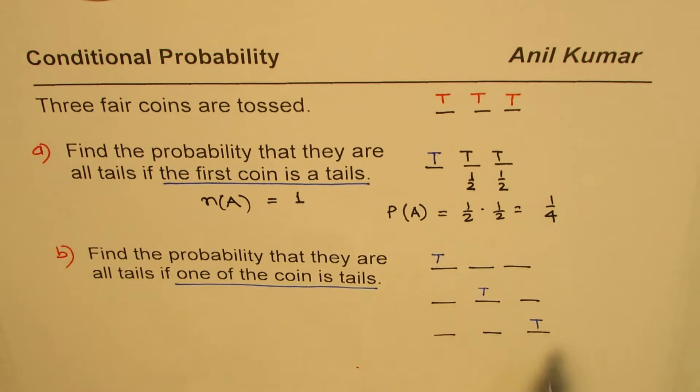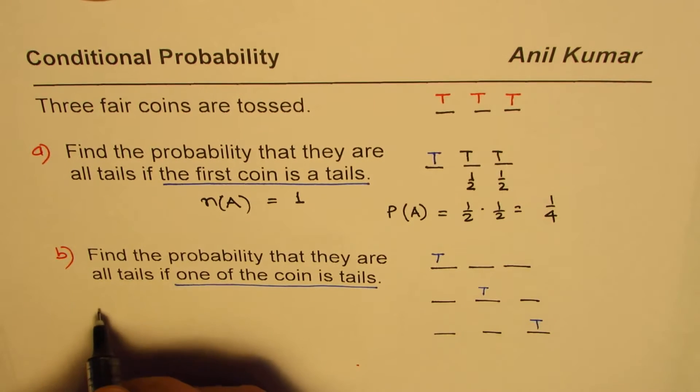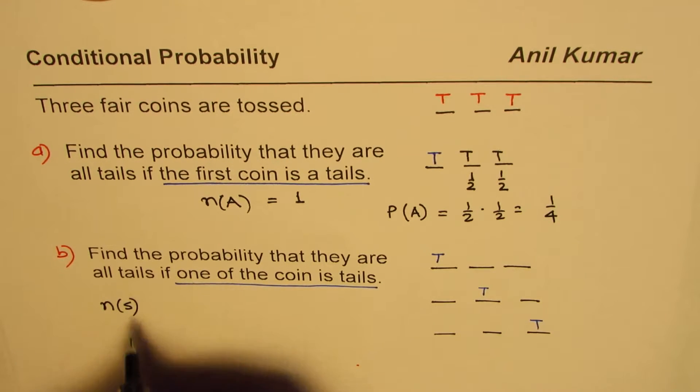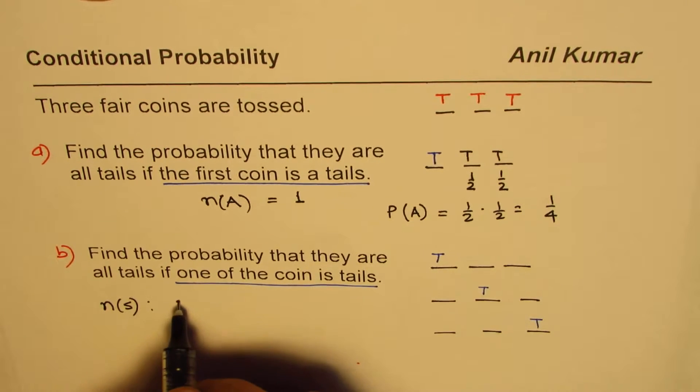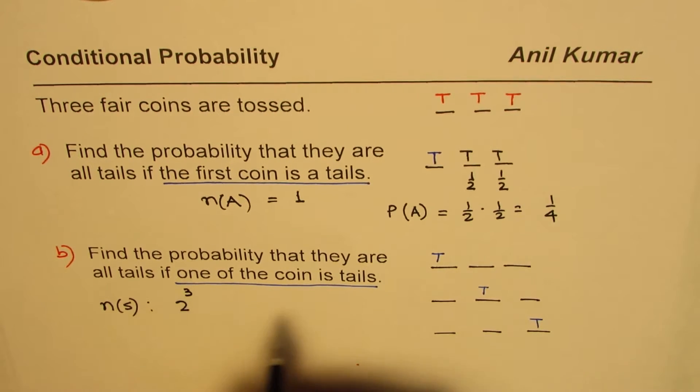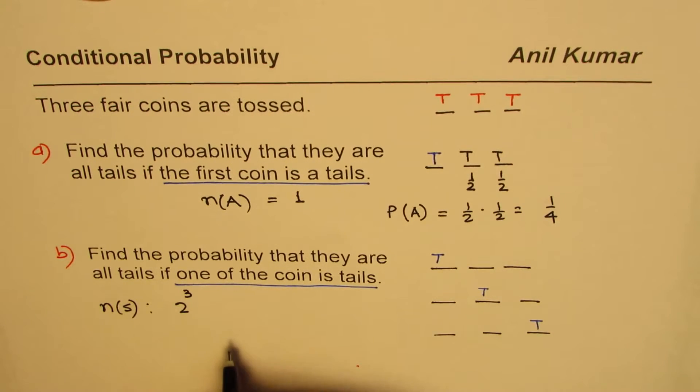Now in the second case we have a condition that any one of them could be tail, not necessarily the first one. So in this particular case, what are the total number of options in our sample space? Since there are three coins to be tossed, it will be two to the power of three.